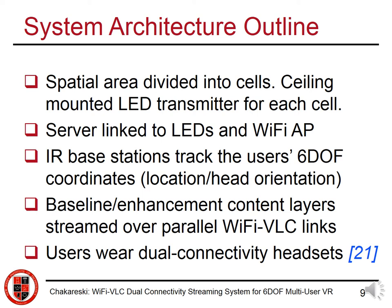Our arena is divided into cells and there is a ceiling-mounted LED transmitter for each cell. The server is linked using fiber optics to the LEDs and the Wi-Fi access point. There are also infrared base stations that track the users' 6 degrees of freedom coordinates, meaning the spatial location and the head orientation. The baseline and enhancement content layers are streamed in parallel over Wi-Fi and VLC links, and the users wear dual-connectivity headsets.